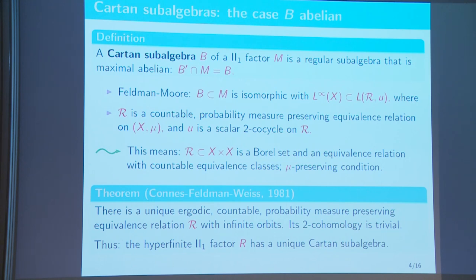One could say that there is no extra structure, nothing to classify — there is just a unique Cartan subalgebra. But let's look at the other extreme case where B is a factor, where things already get more interesting.